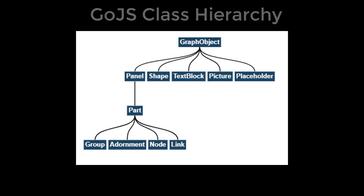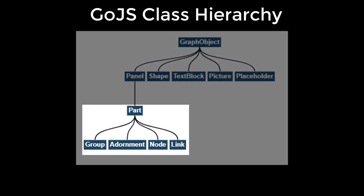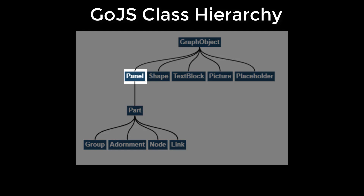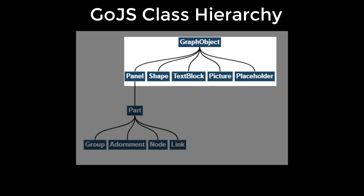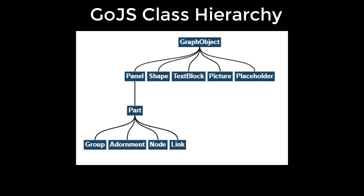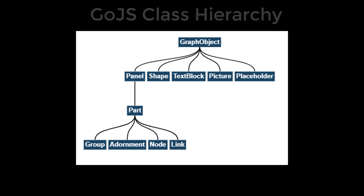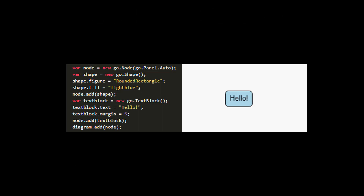GoJS Parts are comprised of panels, which are comprised of various graph objects. You could add a part, say a node, directly to the diagram and specify all its styling at once, like this. But what would happen if you wanted to add another node with some different data but the same style? You'd have to specify the exact style you'd want by hand, like before.